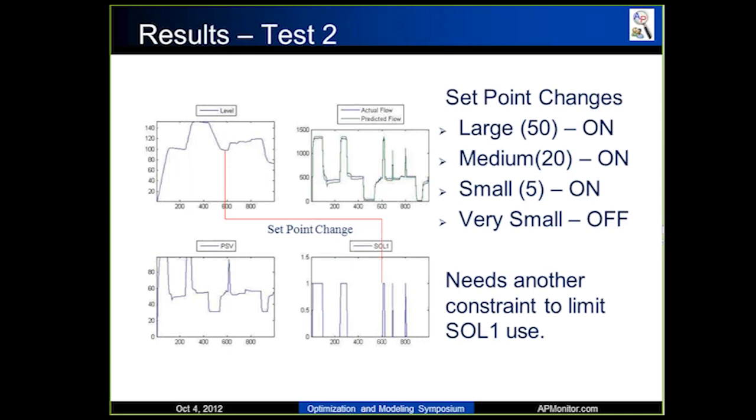But basically what I noticed is that for large setpoint changes, it'll turn the solenoid valve on. For medium ones, it'll turn it on. For small ones, it'll turn it on. But for very small setpoint changes, these are like one or two millimeters, it won't turn on the solenoid valve. It'll simply just use the PSV to change the flow rate. So it's smart enough to figure out it doesn't need to turn on the discrete valve to make it work.